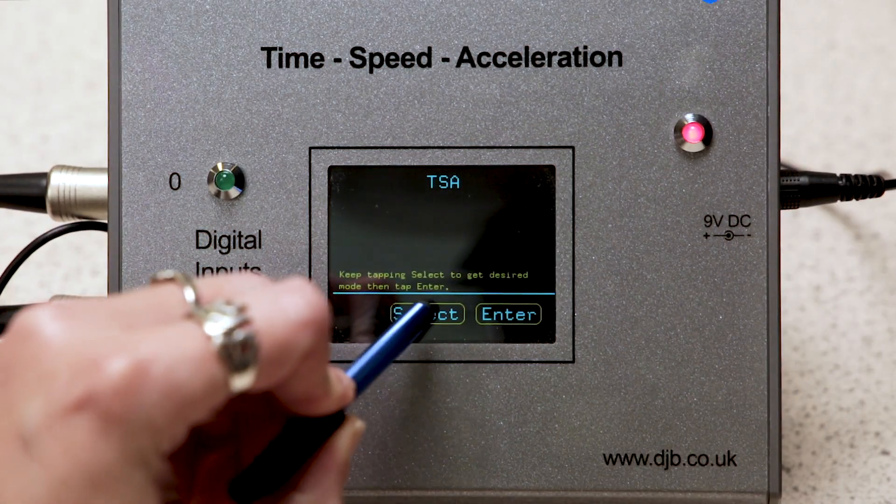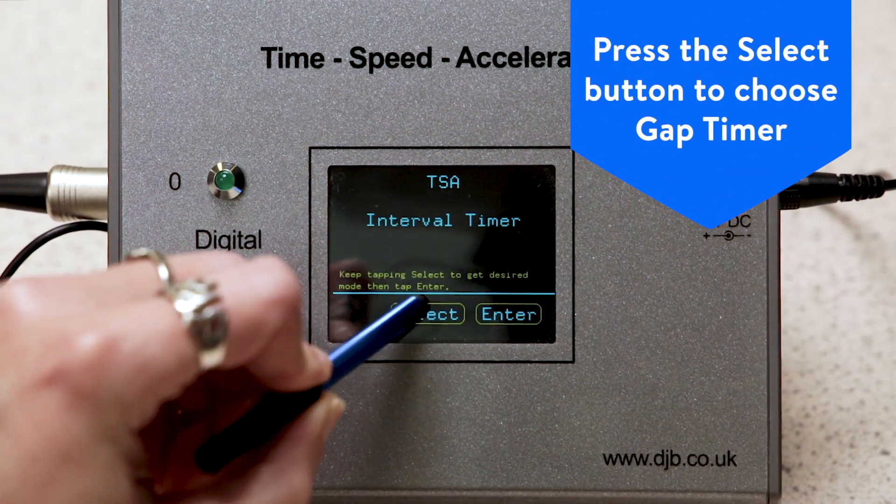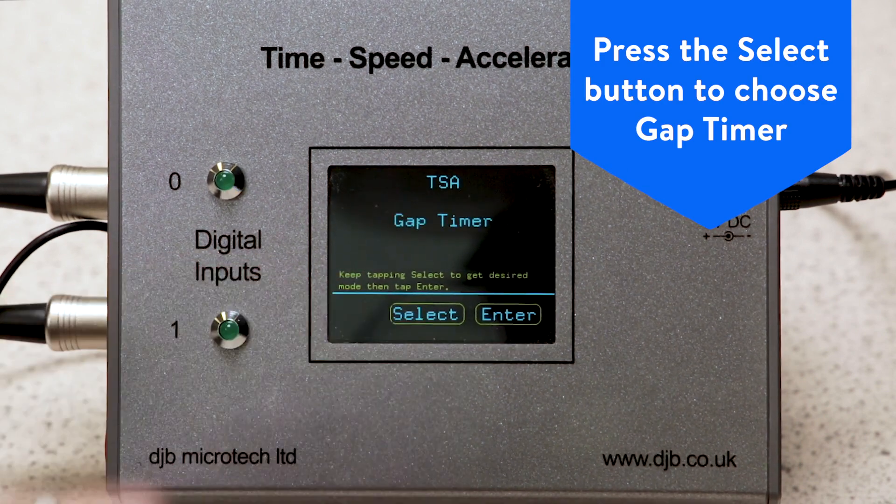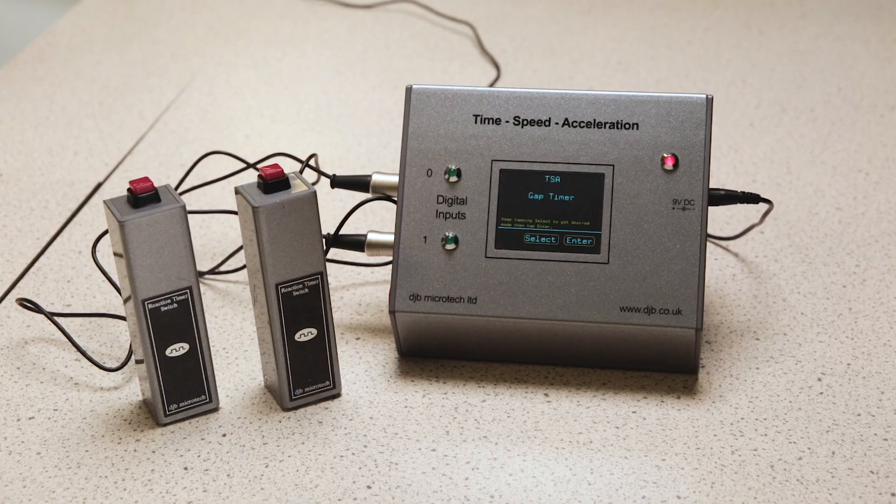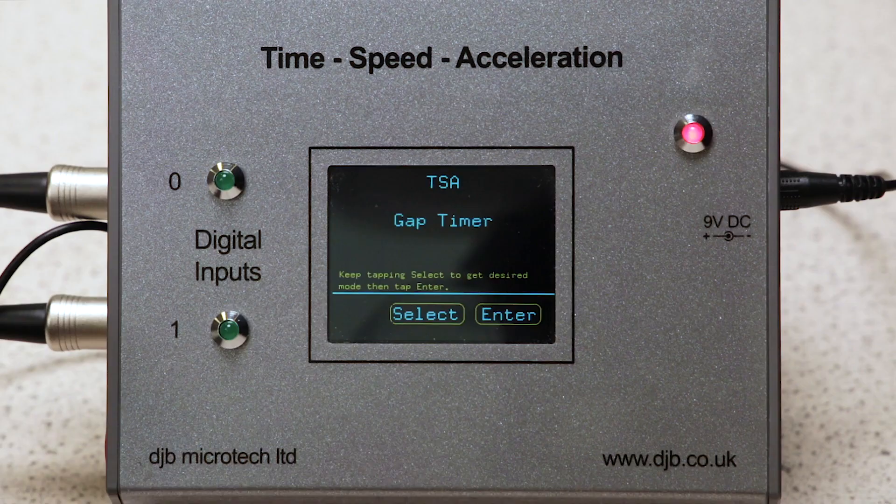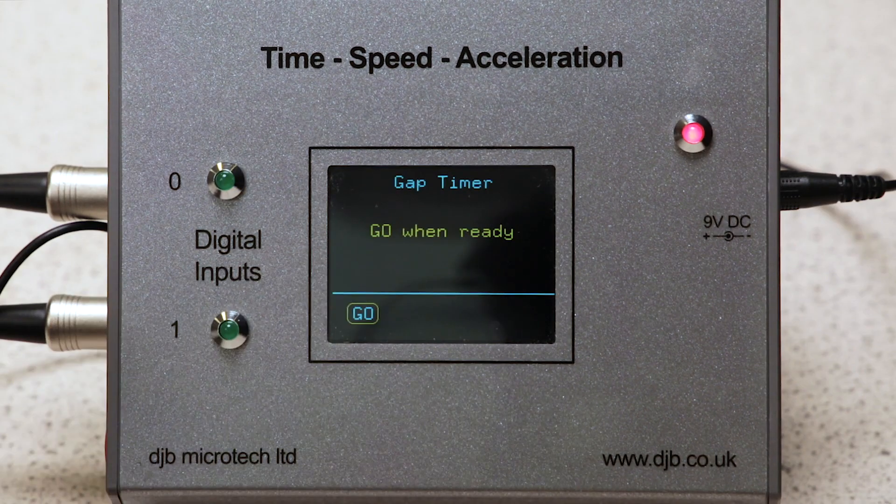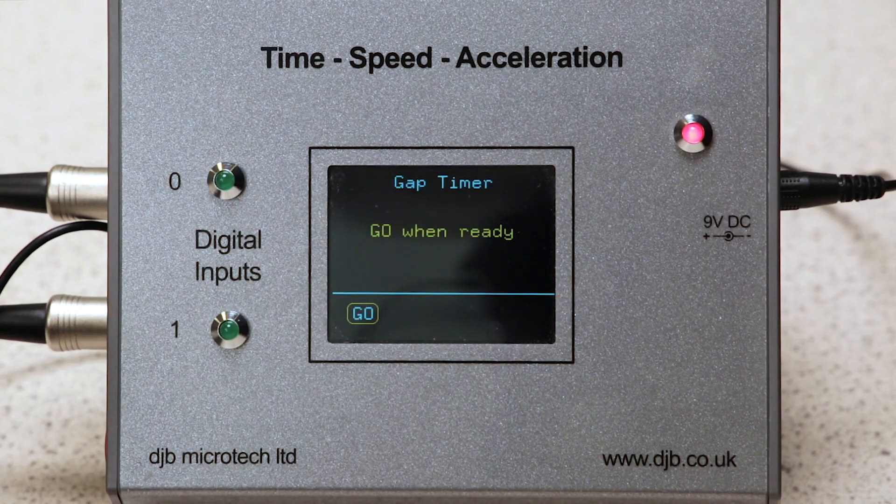Press the select button on the touch screen until the desired mode is reached. In this instance, we are going to measure reaction time using the two reaction timer switches and the gap time mode. When gap timer is displayed, press enter. Gap timer go when ready will be displayed.